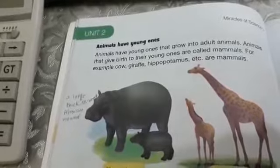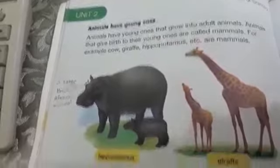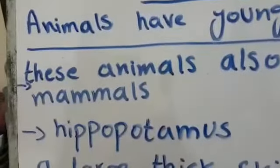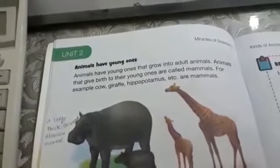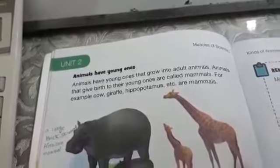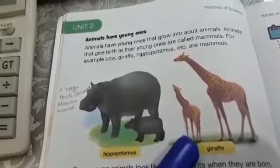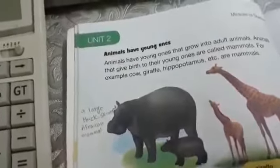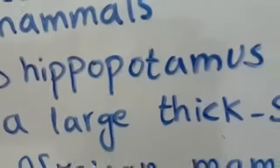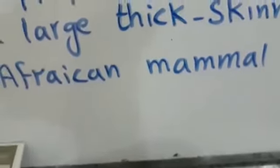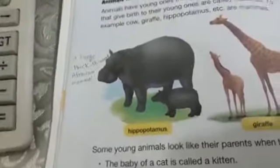After land and water animals, there is a topic: animals have younger ones — these animals give birth to their young ones, so they are called mammals. Animals that have young ones that grow into adult animals and give birth to their young ones are called mammals. For example, giraffe — they are mammals because they give birth to their young ones. And hippopotamus — a large, thick-skinned African mammal.